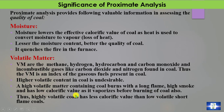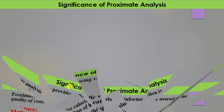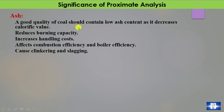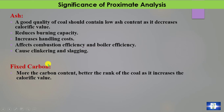Thus, highly volatile coals have less calorific value than low volatile, short-flame coals. A good quality coal should contain low ash content as ash decreases calorific value, reduces burning capacity, increases handling cost, affects combustion and boiler efficiency, and in many cases causes clinkering and slagging. For fixed carbon: more carbon content means more heat content and a better rank of coal, as it increases calorific value.